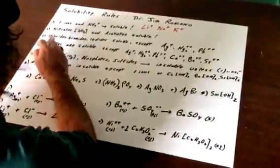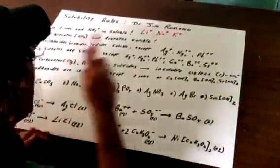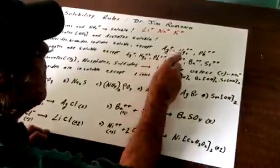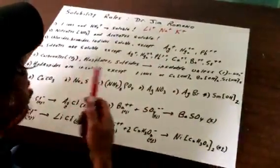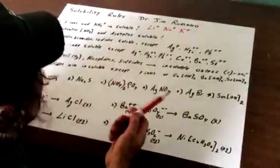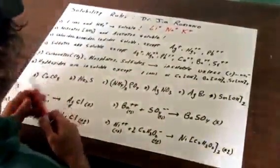All chlorides, bromides, and iodides are soluble unless combined with silver, mercury, or lead. So if I ever gave you silver chloride that would not be soluble, but all chlorides, bromides, and iodides are soluble.